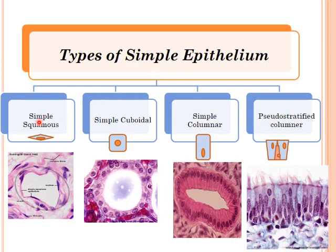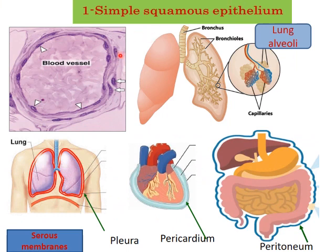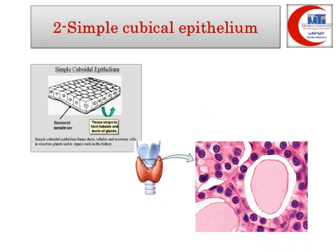Simple squamous epithelium is one layer of flattened cells with flat nuclei. It is present lining blood vessels — called endothelium in that case — and lining the alveoli. It also forms serous membranes like the pleura, peritoneum, and pericardium, where it is called mesothelium.